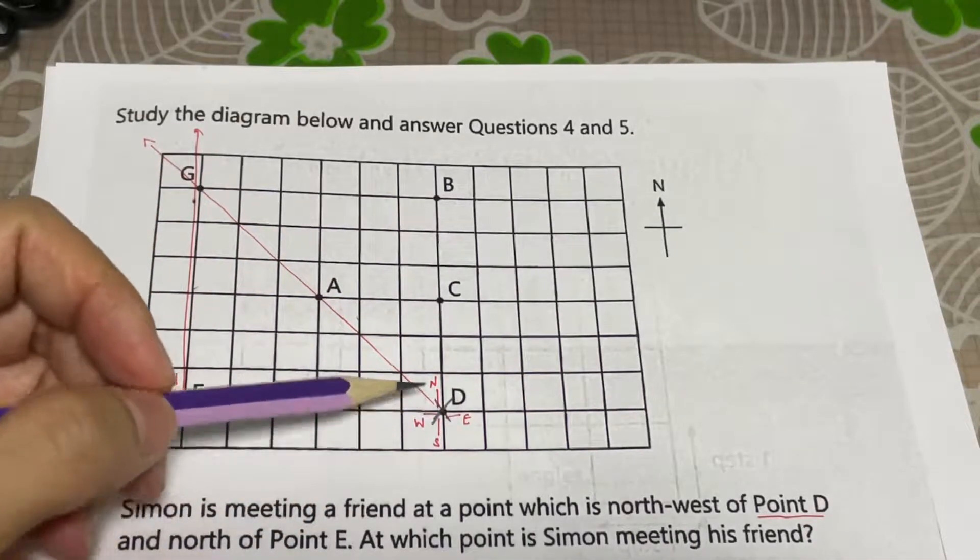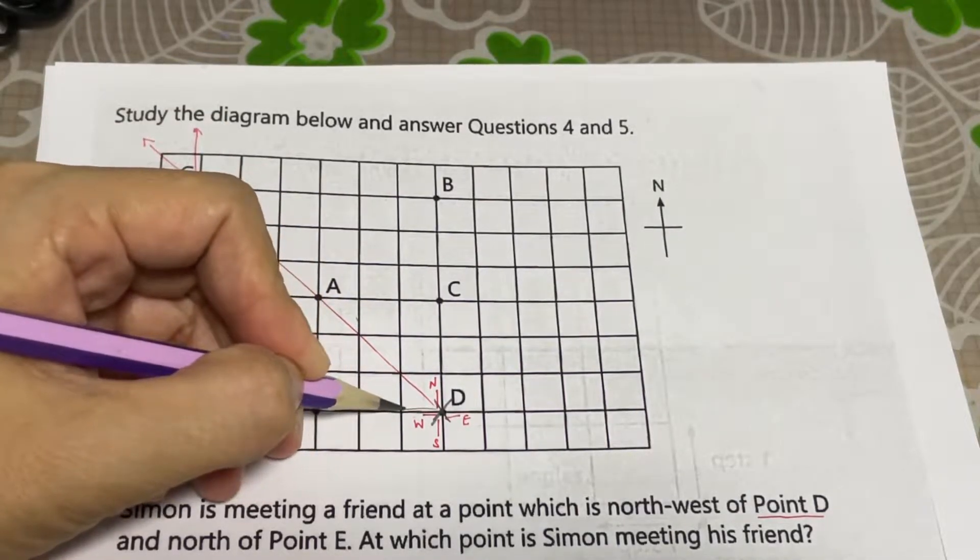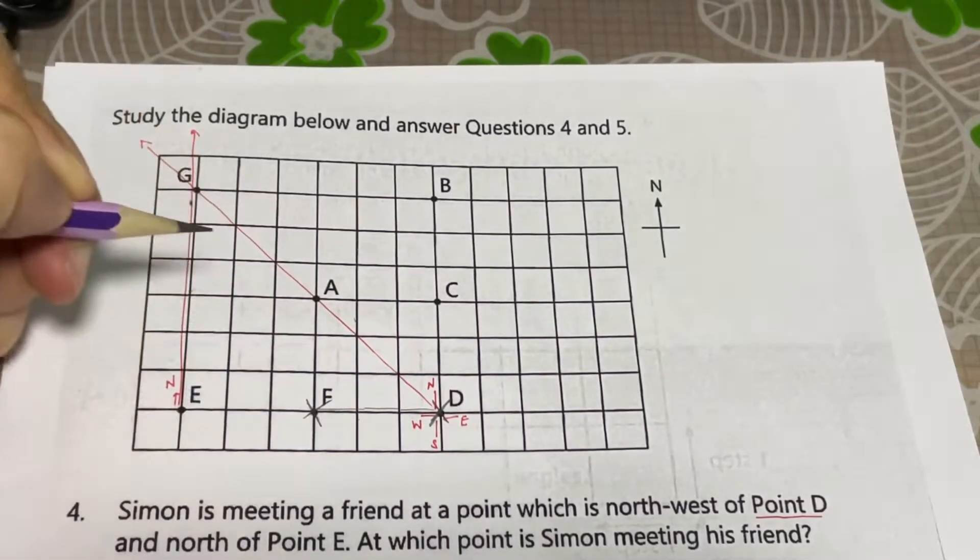She moves 3 steps to the west. So, we know this is the direction of west. So, 1 step, 2 steps, 3 steps. Okay, and she would reach F.